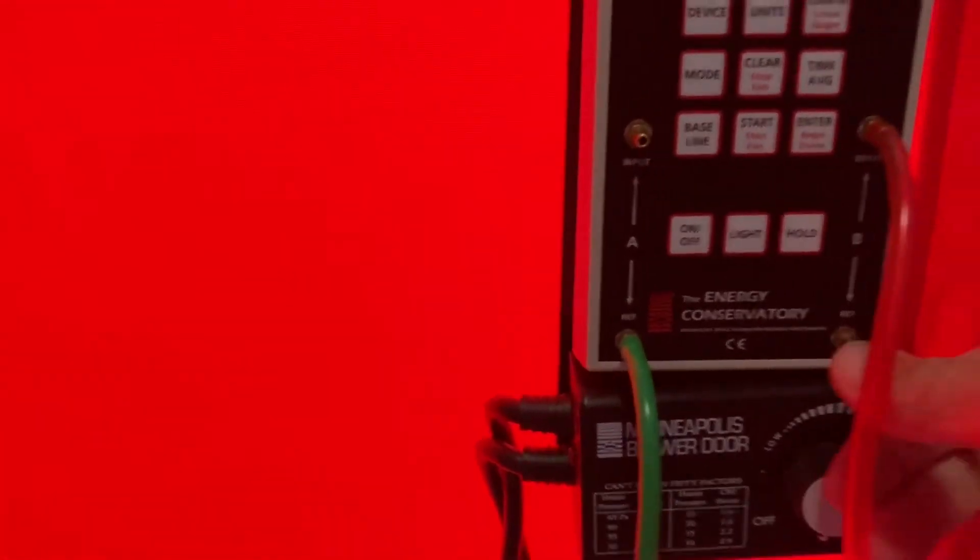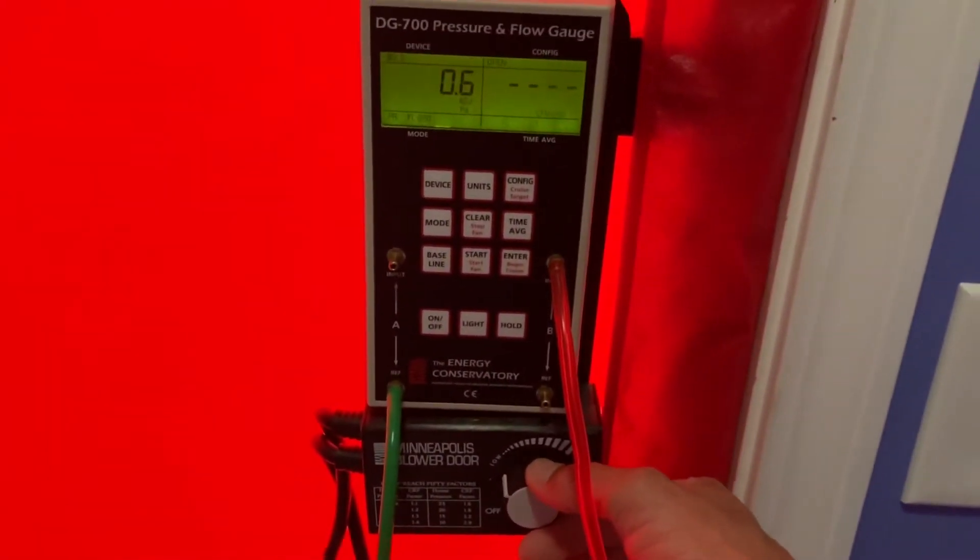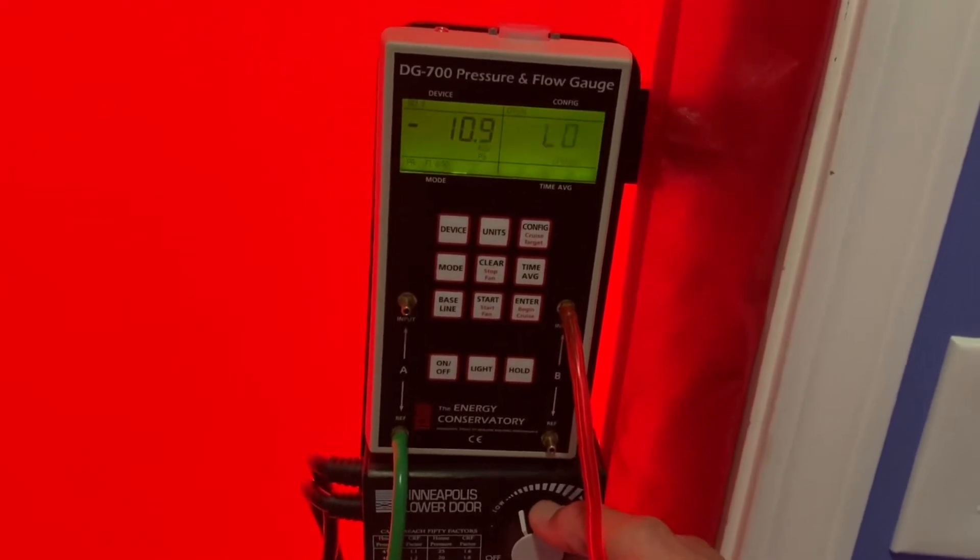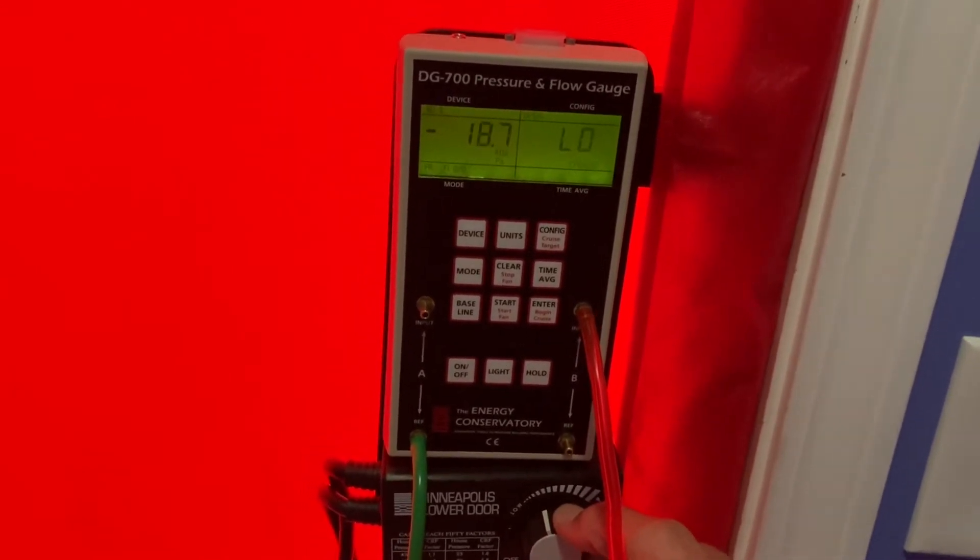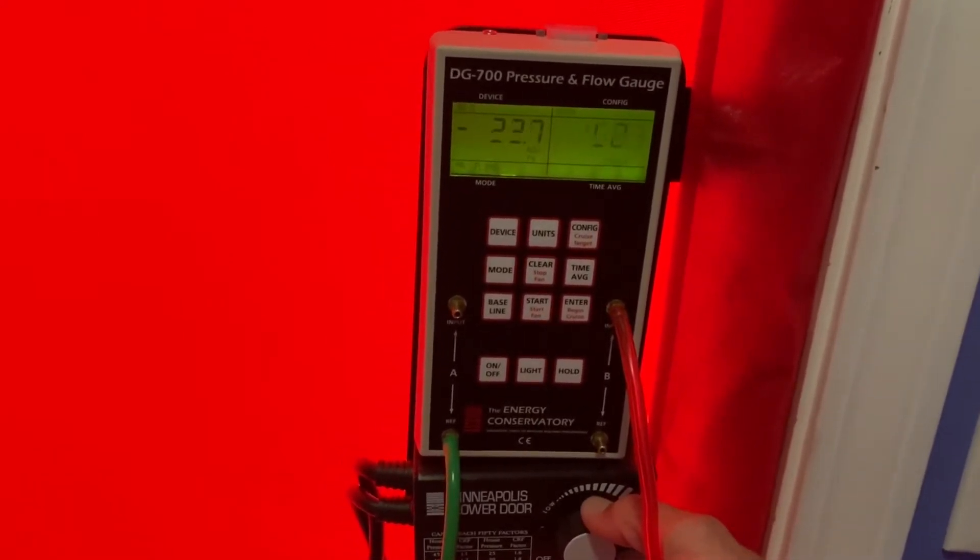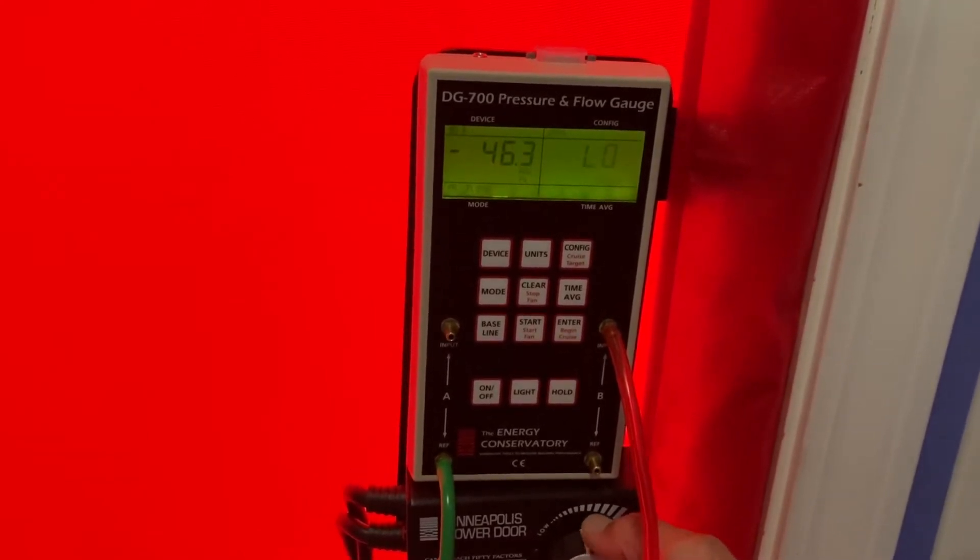We want to ramp the fan up to negative 50 on the A side to get a reading on the B side of CFM at 50. If it starts flashing low, it means your fan is too big for the house. So we're going to have to reconfigure the manometer and the fan to make it smaller.